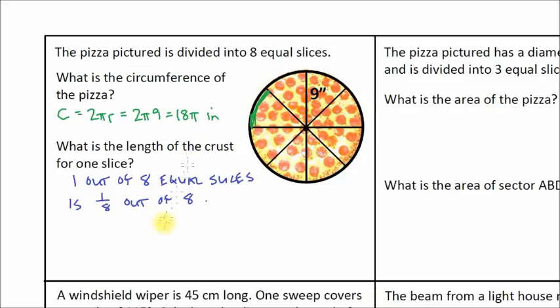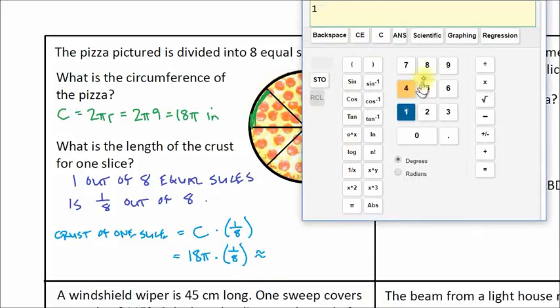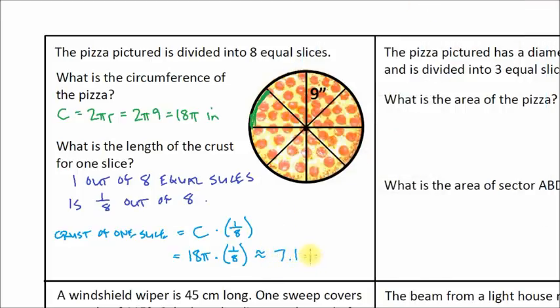So to find our length of the crust, we're going to take the entire circumference. The crust of one slice is equal to the entire circumference times one out of eight, or one-eighth. We only want one-eighth of the crust, and that will give us the crust for one slice of pizza. So that's going to be equal to circumference, which we figured out was 18π, times one divided by eight. Let's put that in our calculator: 18π times one divided by eight. And there's how long the crust is, 7.06 or 7.1, so approximately 7.1 inches.